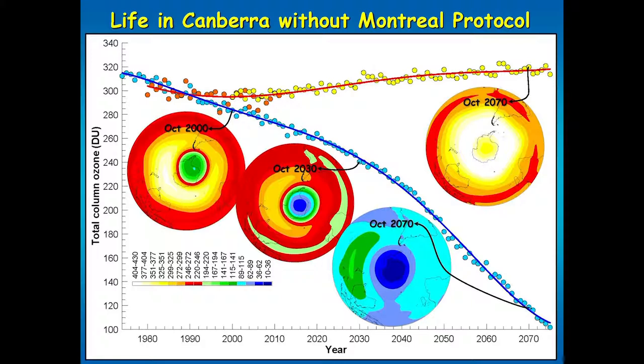Going back to that technical term: very, very bad. On the other hand, with the Montreal Protocol, by October 2070 this is what ozone looks like — no ozone hole at all. There's a nice big ridge of ozone over the southern mid-latitudes, and if anything, more ozone over Canberra than there would have been in October 2000. That shows very clearly what we think would have happened under such a scenario.